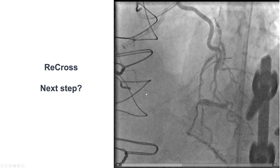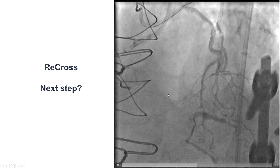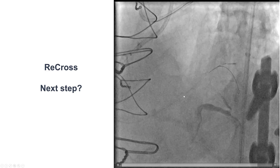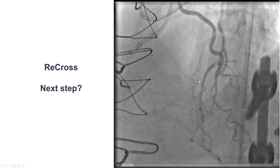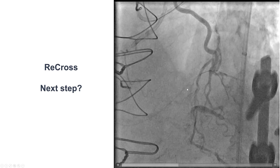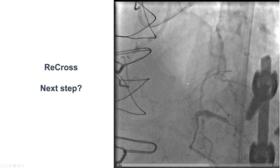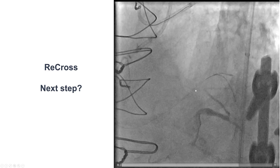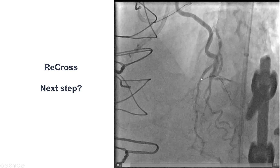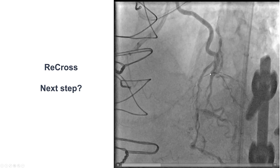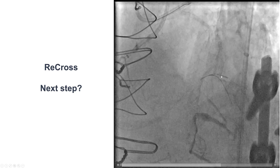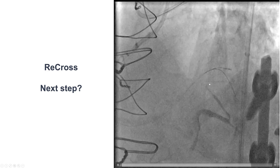After multiple attempts, we tried to use the Stingray balloon — actually we used two Stingray balloons that got damaged in the process — but eventually we were able to get a ReCross dual lumen microcatheter that can also be used for re-entry. Then we had a surprise: we thought the knuckle would have gone into the posterior lateral, but now we saw that the knuckle had actually gone out, likely into a small side branch, which would become important as the case progressed.